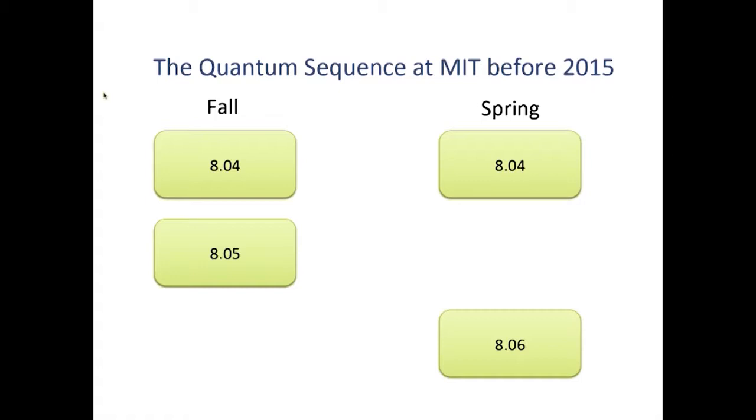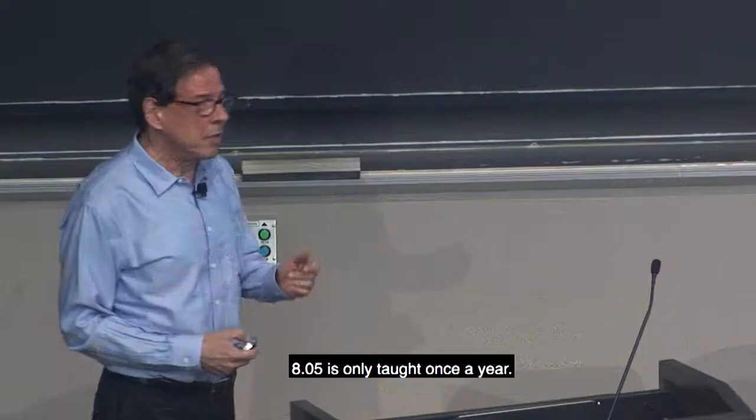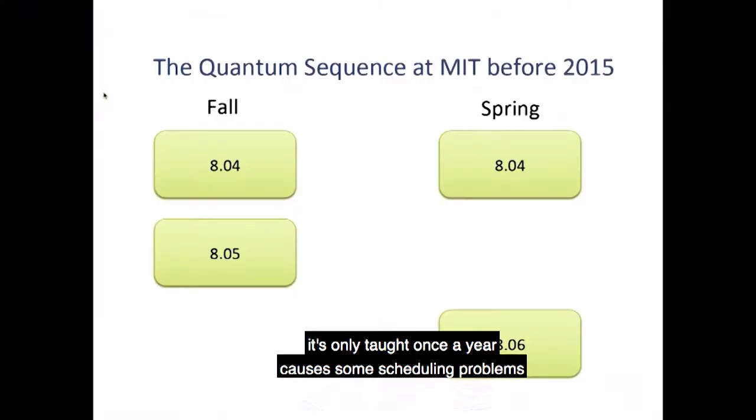So here is how we organize the teaching of quantum mechanics using the fall semester and the spring semester. 804, the course that is taken by most of the students, is taught two times a year. And before 2015, it was taught exactly in the same way. 805 is only taught once a year. It's a slightly more advanced course. And the fact that it's only taught once a year causes some scheduling problems for a number of students.